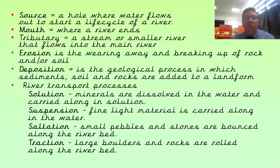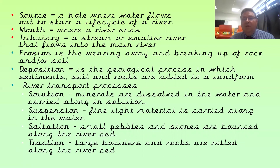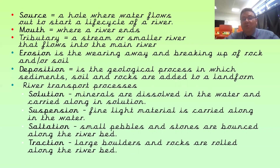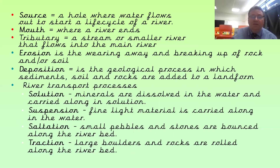The mouth is where the river ends — where it reaches a lake or the sea. A tributary is a small stream or smaller river that flows into the main river. Erosion is the wearing away and breaking up of rock and soil as the river moves through. Deposition is a geological process in which sediments — the material in the water — drop when the water loses power, literally depositing onto the land or under the river, creating new landforms.